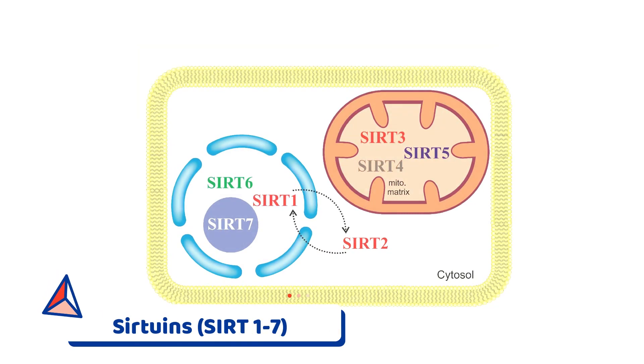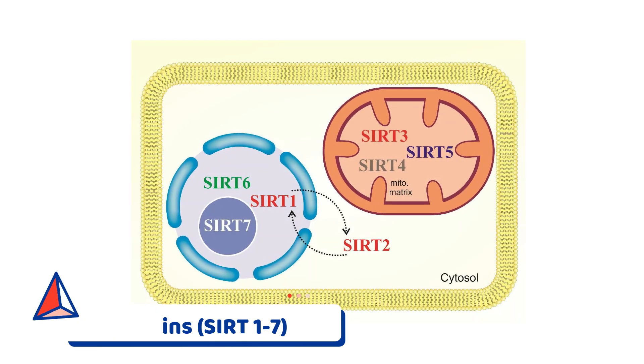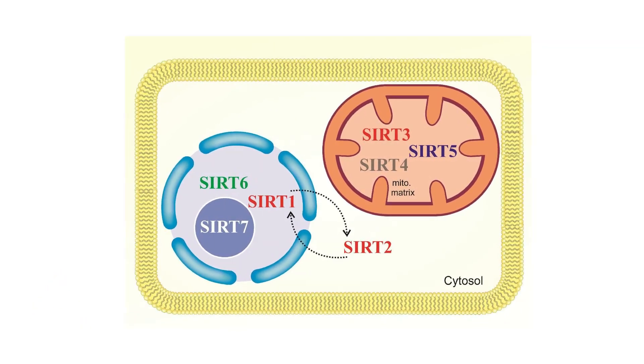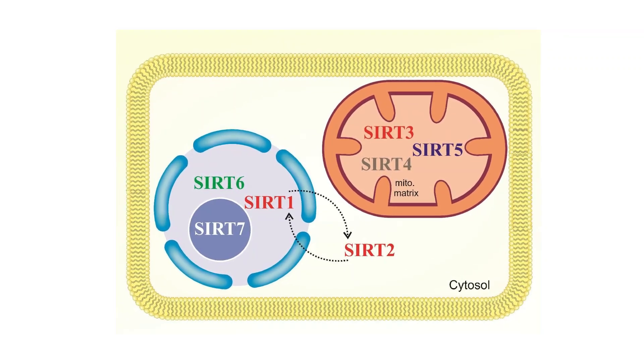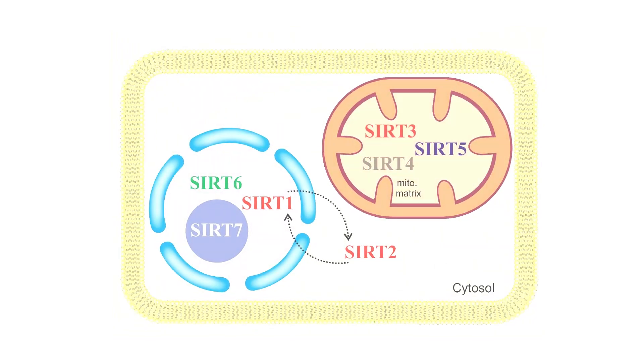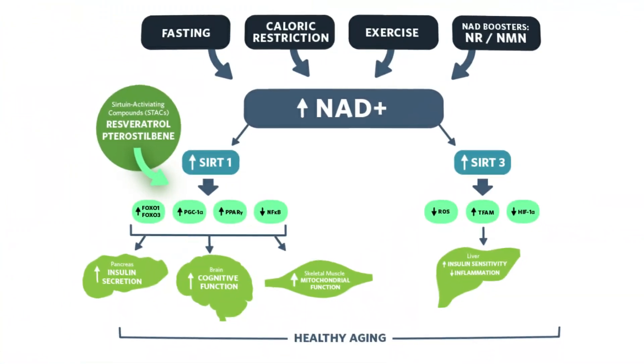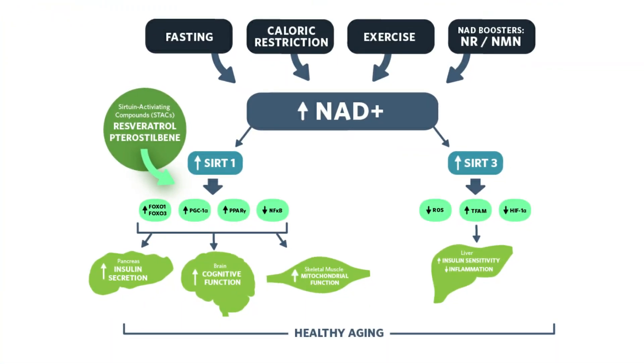This is where the sirtuins come into the picture. These enzymes are found within the nucleus, cytoplasm, and mitochondria of the cell. They are the ones who stop these unwanted genes from opening up. As we get older, the sirtuins start to get inactive and diseases like cancer ensues.